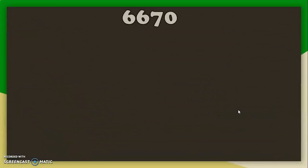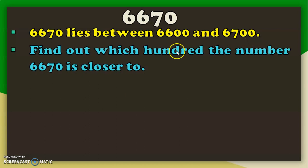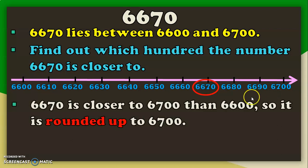Let us see another example with the 4-digit number 6670. We will round it to the nearest 100. The hundreds digit is 6, and 670 lies between the hundreds 600 and 700. So, 6670 lies between 6600 and 6700. Using the number line, we can see that 6670 is closer to the upper limit 6700. So, it is rounded up to 6700.